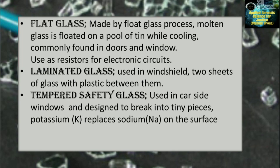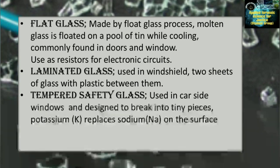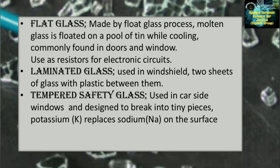on a pool of tin while cooling. Flat glass is commonly found in doors and windows and is used as resistors for electronic circuits. Next is laminated glass, used in windshields, consisting of two sheets of glass with plastic between them. Tempered safety glass is used in car side windows and is designed to break into tiny pieces; potassium replaces sodium on the surface.